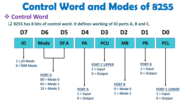In IO mode, there are a total of 3 modes. The first bit D7 should be 1 for IO mode and 0 for BSR mode. In IO mode, port A has 3 modes — mode 0, mode 1, and mode 2. Port B has 2 modes — mode 0 and mode 1. Port C functions in BSR mode only.